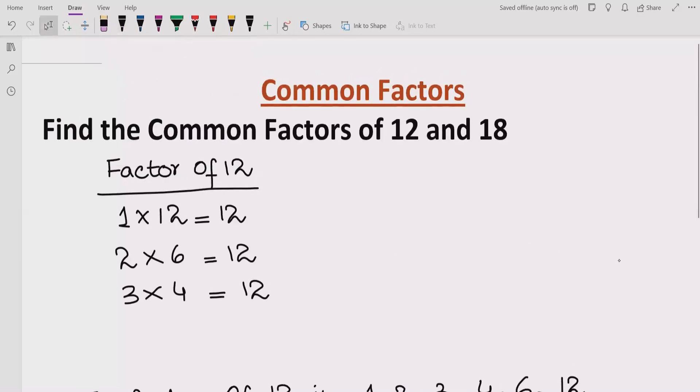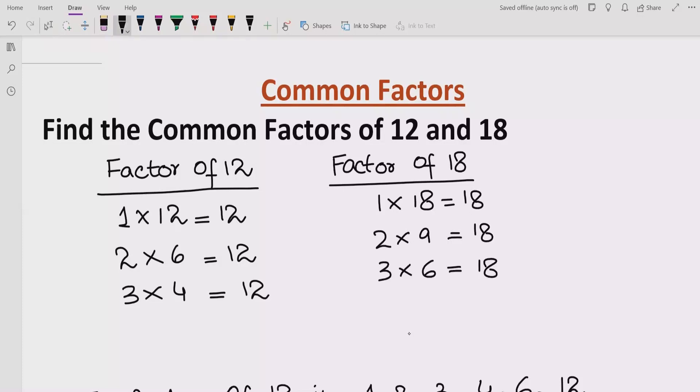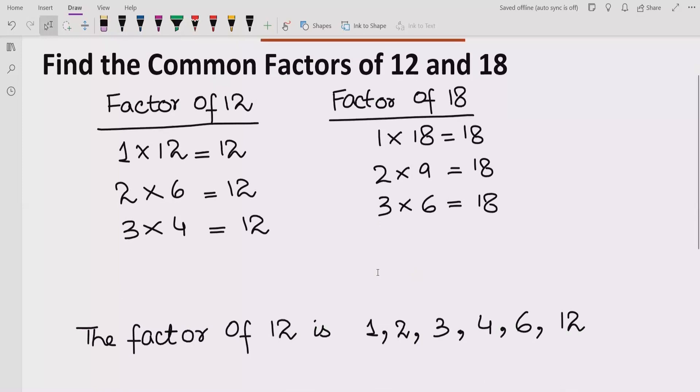Now we will find factors of 18. Factor of 18, like if we say 1 multiplied by 18 is 18, and 2 multiplied by 9 is also 18. Okay, now for 4 and 5 we do not have factors. About 6, we have 6 multiplied by 3 is 18.